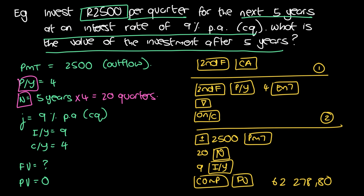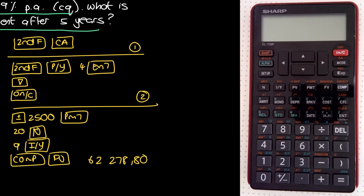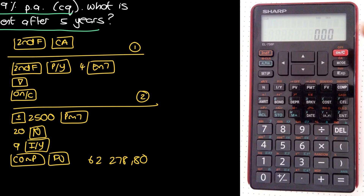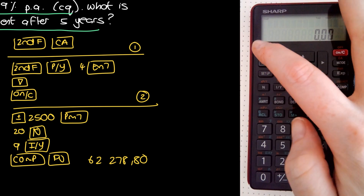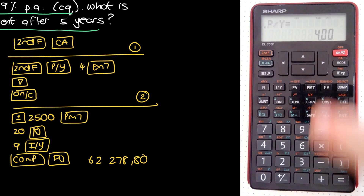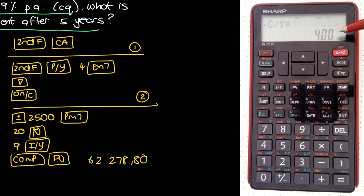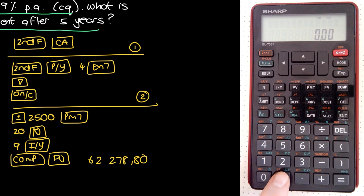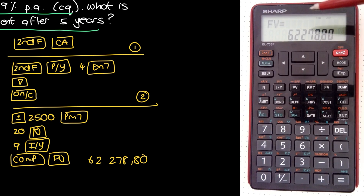Let's now do this on the actual financial calculator. Press second function CA to clear. Then second function P/Y, enter four and press enter. Press the down arrow — we get C/Y equals four, which is consistent with what we want, so P/Y and C/Y are the same. Press ON/C, then enter negative 2500 PMT, then 9 I/Y, then 20 N. Finally, compute FV and we get an answer of 62,278 rand and 80 cents.